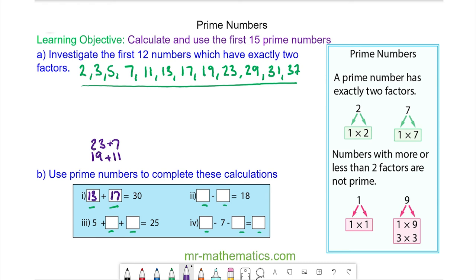For question two, two primes that have a difference of 18, we could have 23 take away 5, or 29 take away 11.